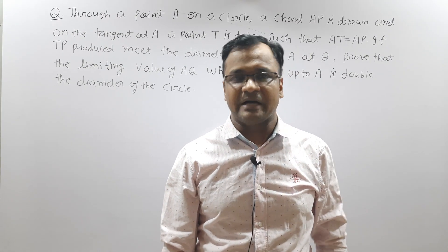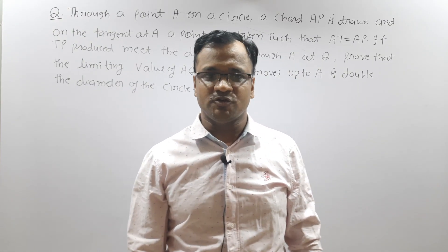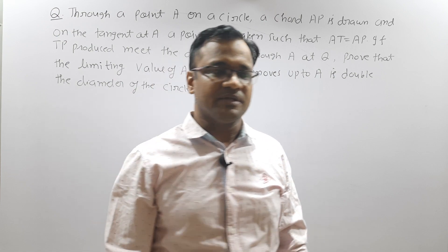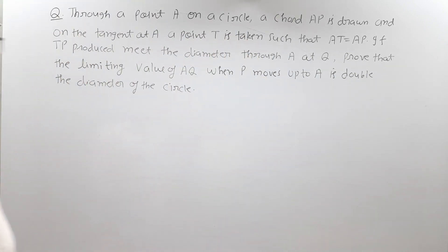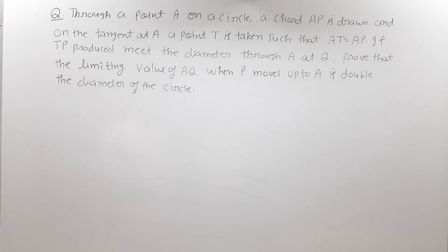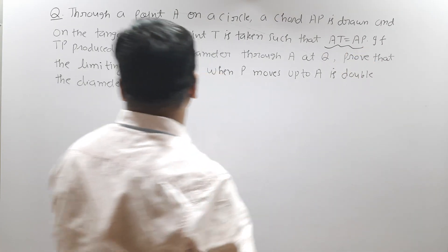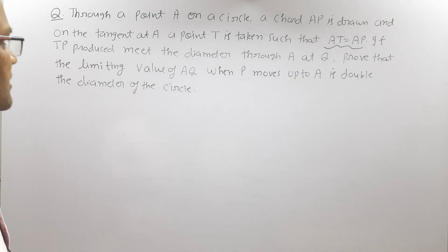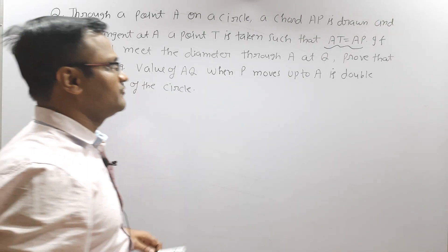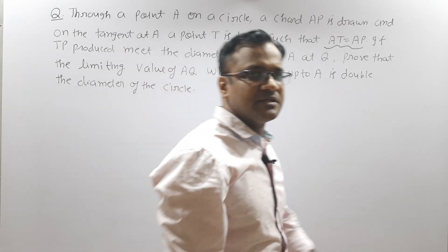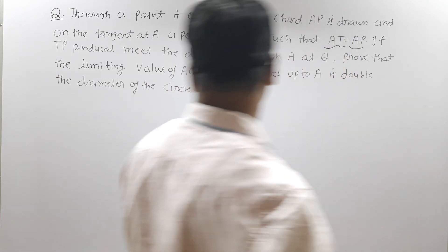Hi everyone. In this video I am going to discuss a very nice geometric limit problem. As you can see, you are given a point A which lies on a circle, and chord AP is drawn. On the tangent at A, a point T is taken such that AT equals AP. If TP produced meets the diameter through A at the point Q, then you have to prove that the limiting value of AQ when P moves up to A is double the diameter of the circle.